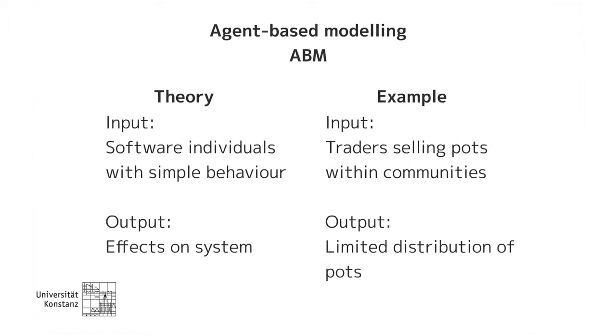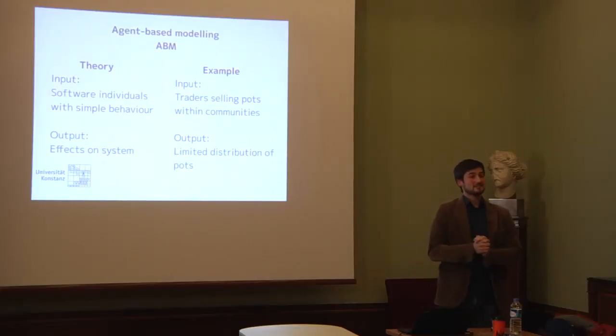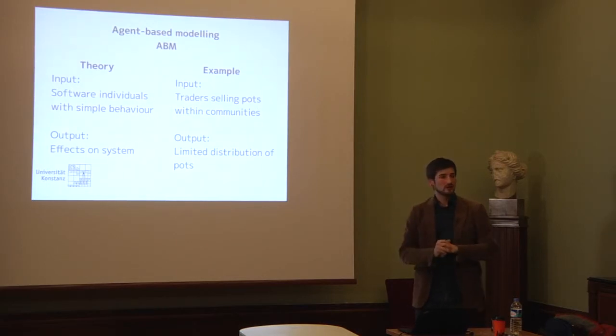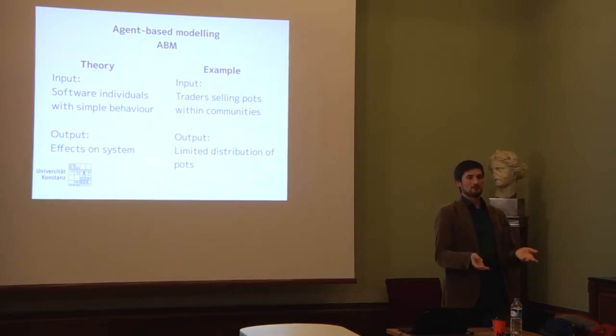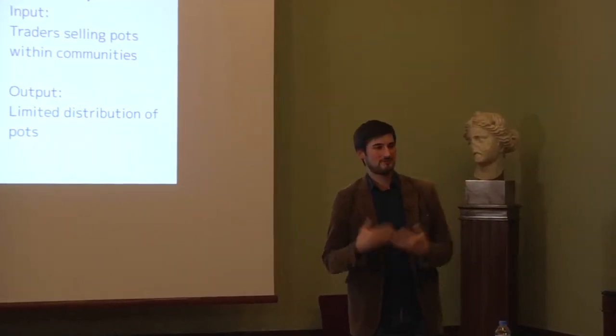I'll explain agent-based modeling very briefly. Basically, in an agent-based model we simulate little individual software agents — little boys and girls running around in a software landscape, not aimlessly but guided by very simple rules. These software individuals can be programmed with very simple rules that we hypothesize people in the past behaved like, and we can see what kind of outcomes that gives. If we have 1,000 Roman traders guided by simple rules of supply and demand located on different markets — what kind of output do we get? Does this kind of approach allow us to test the hypotheses of Bang and Temmin? I think it does.